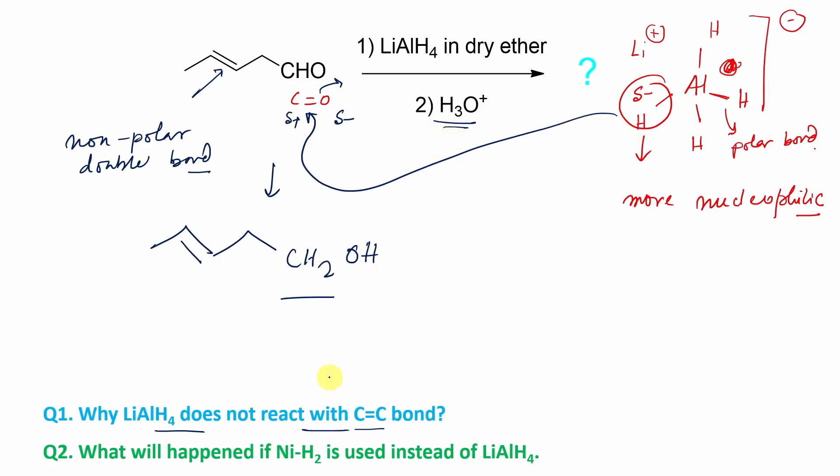Now second question: what happened if Ni-H2 is used rather than lithium aluminum hydride? Remember, nickel and hydrogen electronegativity is not that much, and this is not that much polar. This is a covalent type, I mean not ionic, so it's not covalent type.